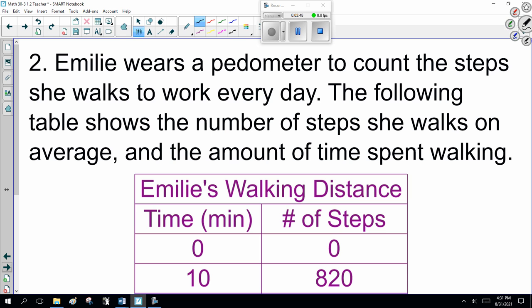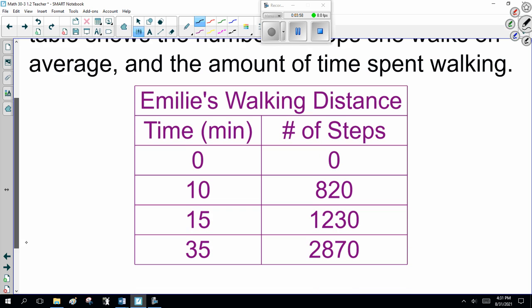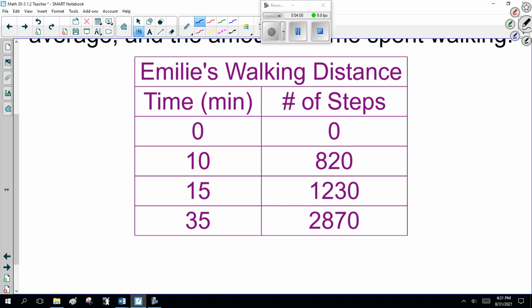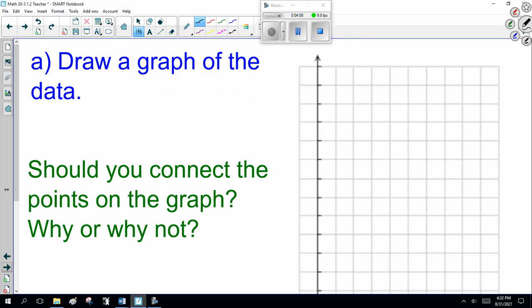Emily wears a pedometer to count the steps she walks to work every day. The following table shows the number of steps she walks on average and the amount of time spent walking. So time in minutes: 0, 10, 15, and 35. Number of steps is 0, 820, 1230, 2870. Not a lot of data points but enough that we can graph someone. Yes of course I'll graph the data.